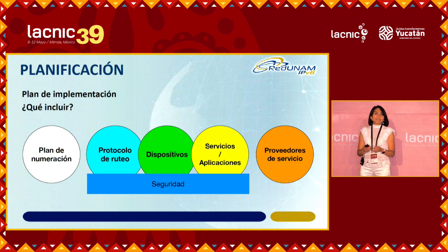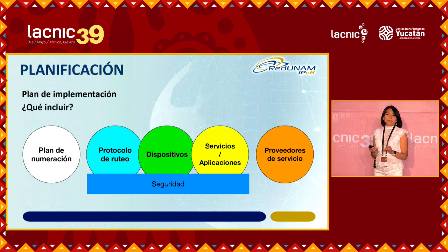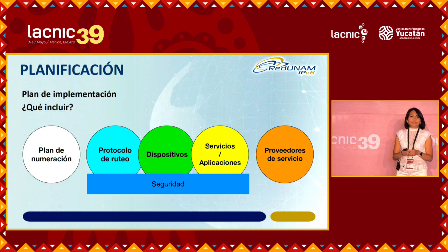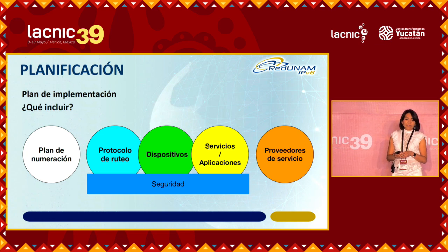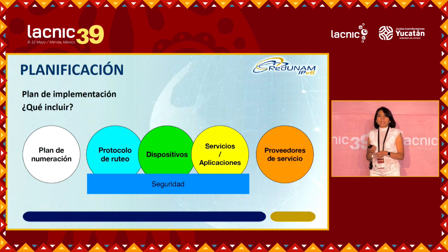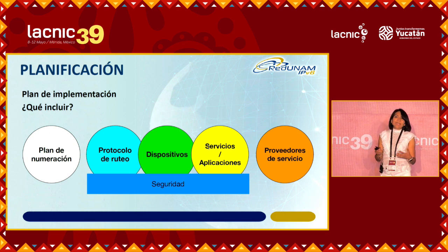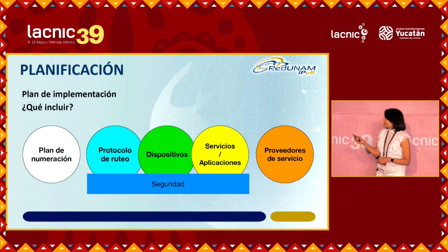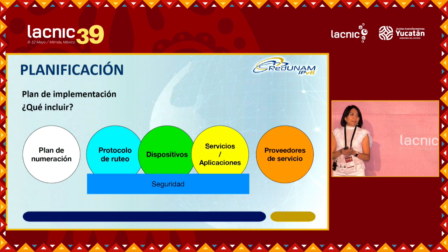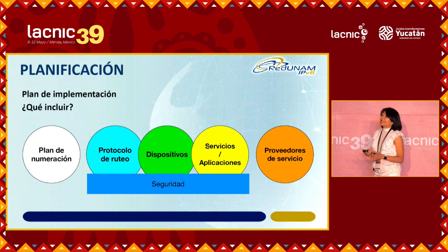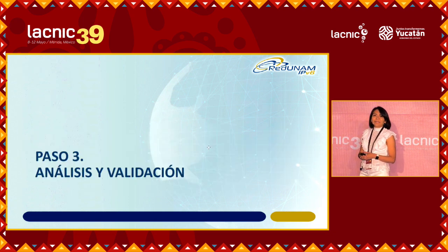The most important things to include in an implementation plan: first, the numbering plan; the routing protocols for the devices; how IPv6 addresses are going to be assigned to end users or devices; services and applications — including how apps will work with databases, since many homemade apps were written using addresses rather than domains; service providers; and security. Security cannot be ignored, nor can we wait to include it after IPv6 has been deployed. We need to think of security measures that go hand in hand with the implementation of IPv6.